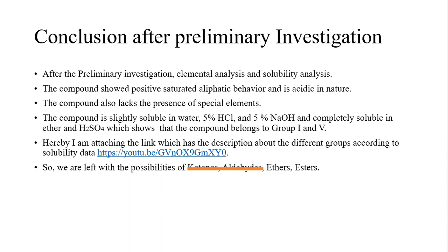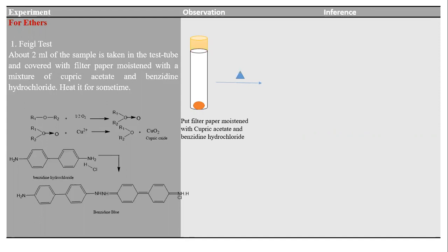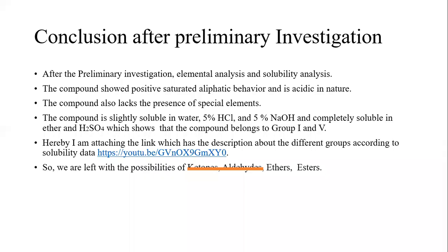Now we check for the presence of ethers using the Feigl test. We take the sample in a test tube and plug it with a filter paper moistened with cupric acetate and benzidine hydrochloride. We heat the sample, and if the filter paper changes to blue, it shows the presence of ether; otherwise it is absent. The possibility of ether is also ruled out.